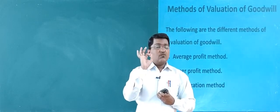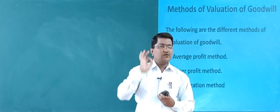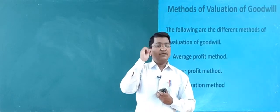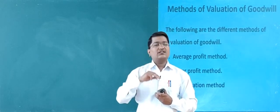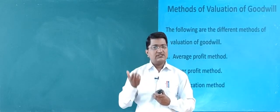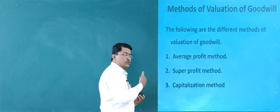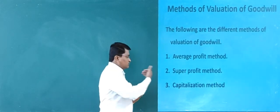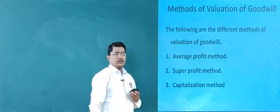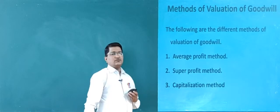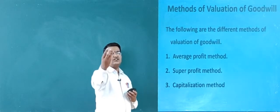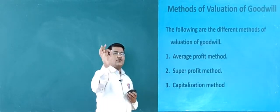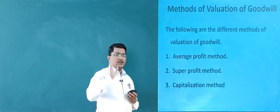So please understand what are the methods for valuation of goodwill. There are three methods. What are those three methods? First one is average profit method, second is super profit method, and third is capitalization method. These are the three most important methods for valuation of goodwill.